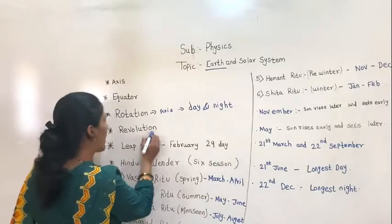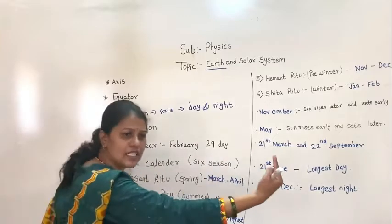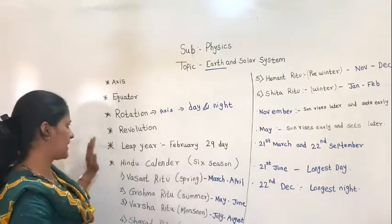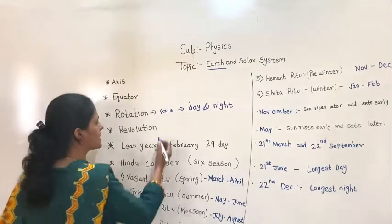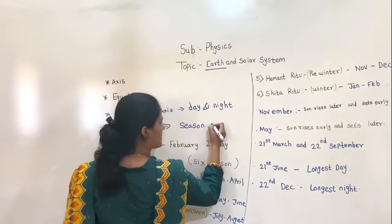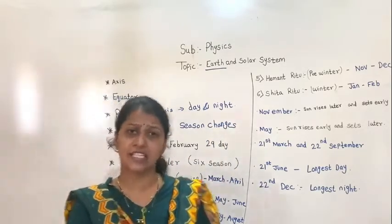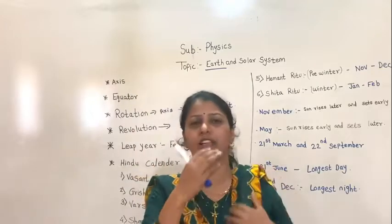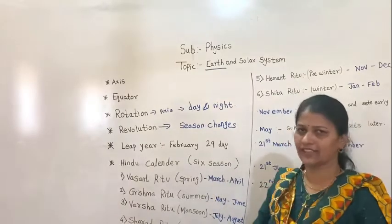We have also discussed revolution. Revolution is when the Earth moves in a circular path around the Sun. Because of revolution, season changes take place. There are different seasons — summer, winter, and rainy — though rainy season does not occur in all countries. According to the Hindu calendar, there are six seasons.